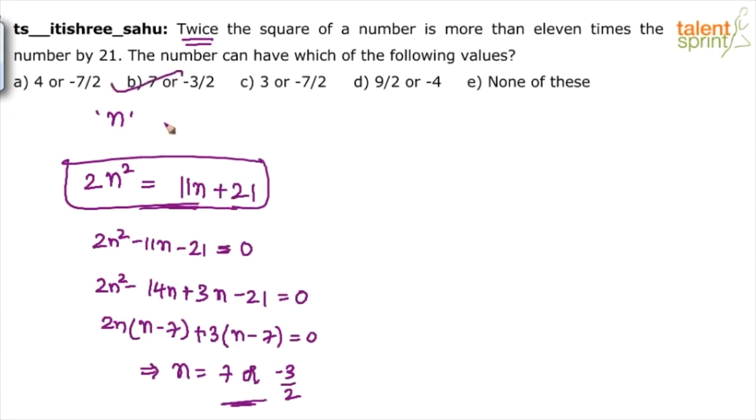Or simply verify from the options. For example, take option 1, it says 4. One of the values of N should be 4. So try twice the square of number. 2 into 4 square equals to 11 into 4 plus 21. 11 into 4 is 44. 2 into 4 square itself is only 32. 16 into 2, 32. Here itself we have got 44. 44 plus 21 does not satisfy. So option A is wrong.